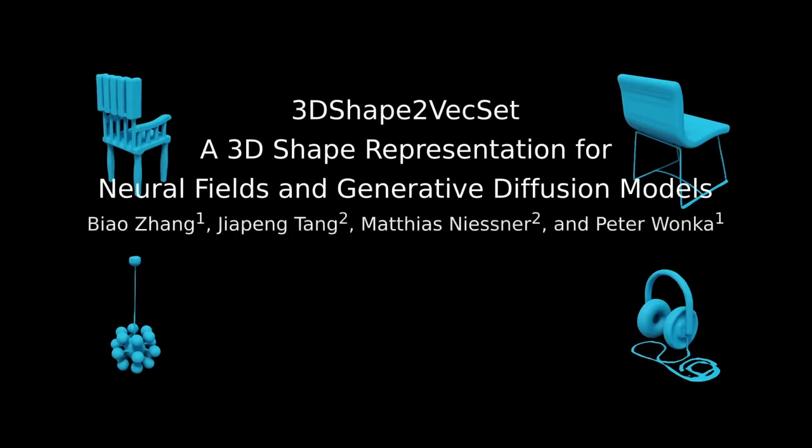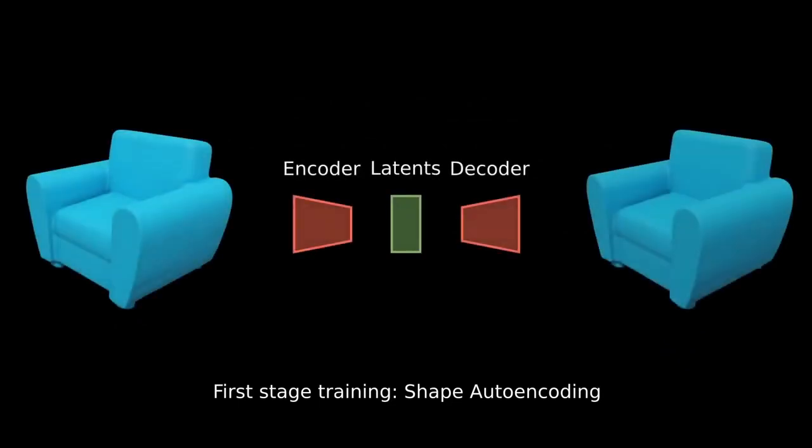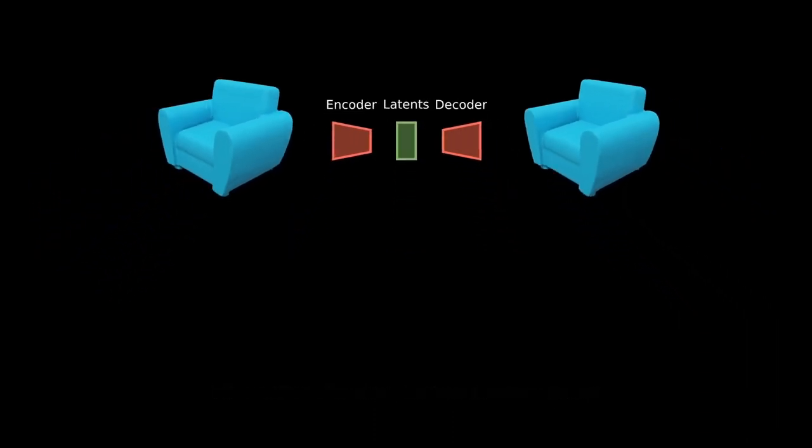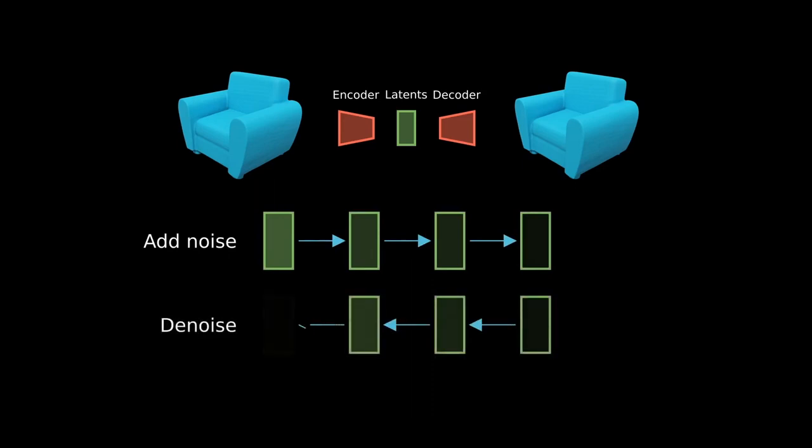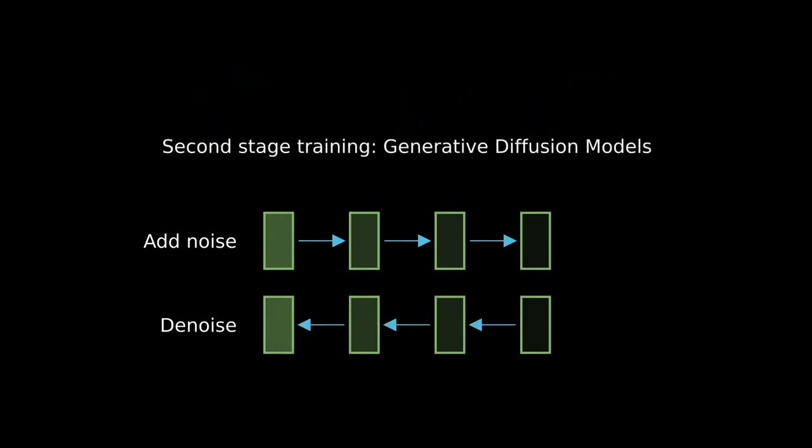We present 3D shape-to-vex set, a 3D shape representation for neural fields in generative diffusion models. Our method has two stages. The first stage is a shape autoencoding framework for 3D neural fields. The second stage is a denoising diffusion probabilistic model trained in latent space. The diffusion contains a diffusion process and a denoising process.